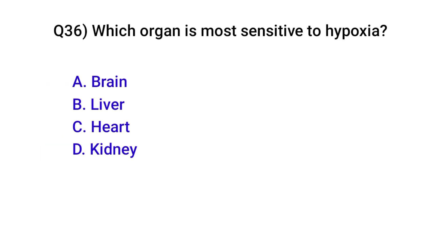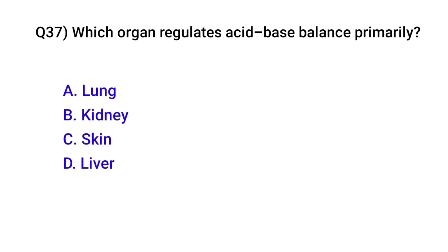Question number thirty-six: Which organ is most sensitive to hypoxia? Correct option is A: Brain. Question number thirty-seven: Which organ regulates acid-base balance primarily? Correct option is B: Kidney.